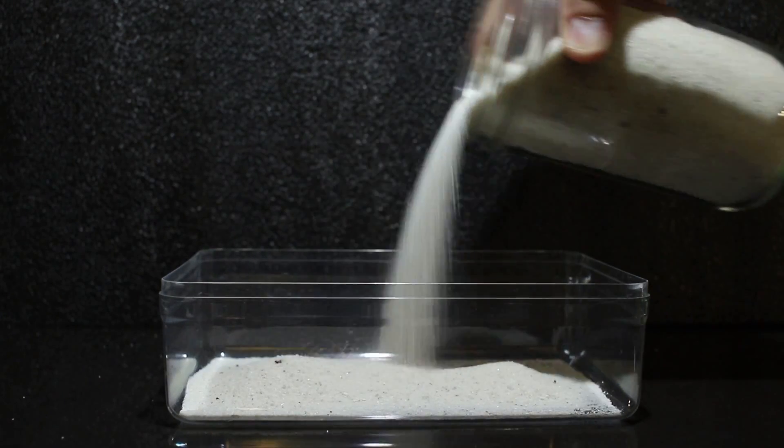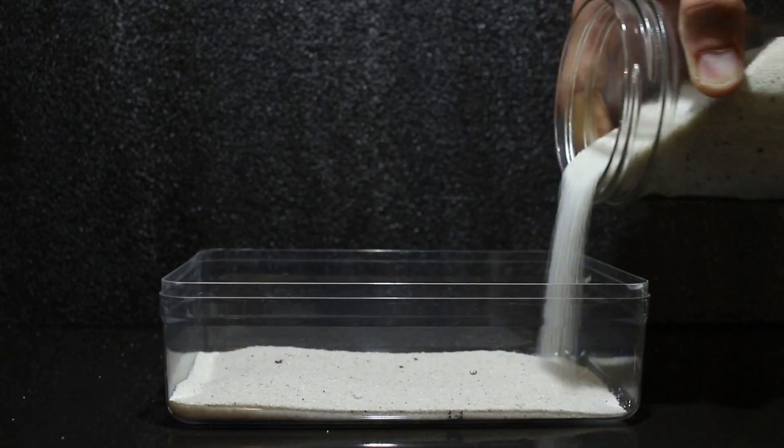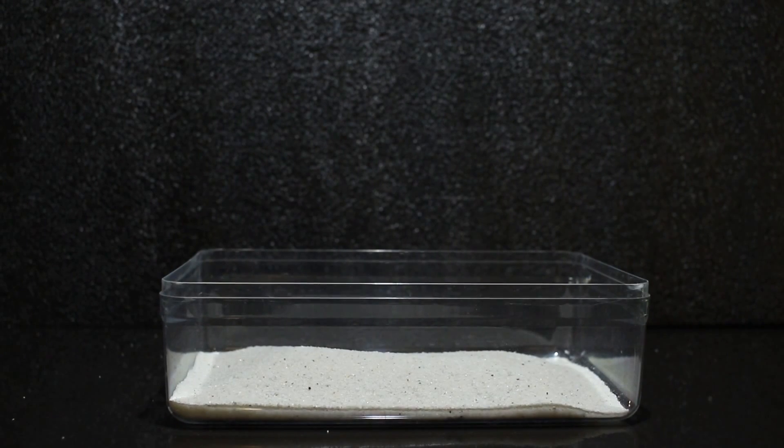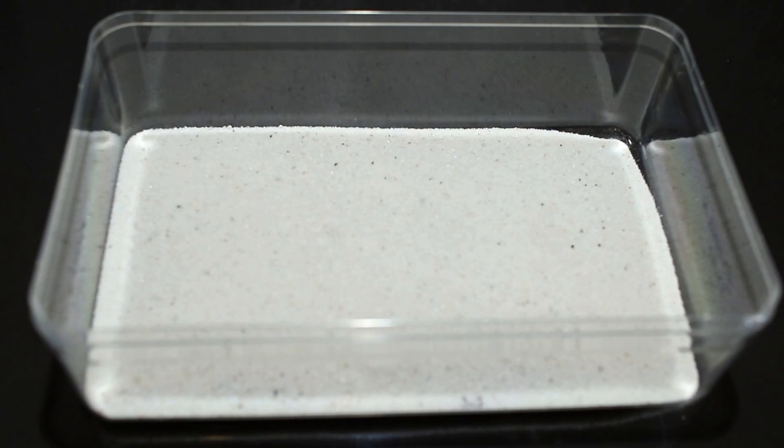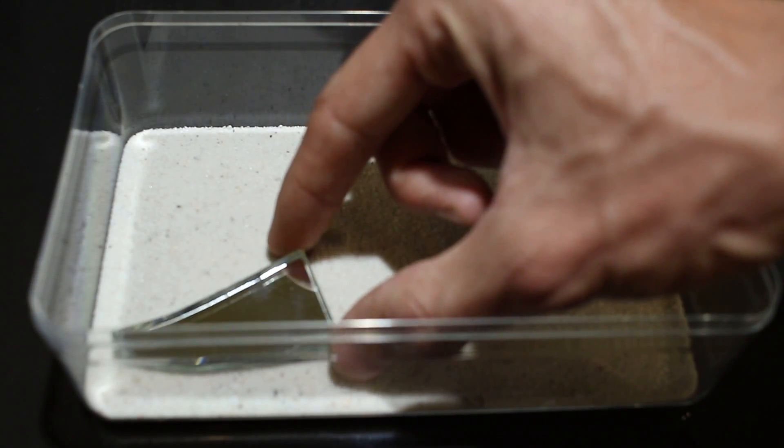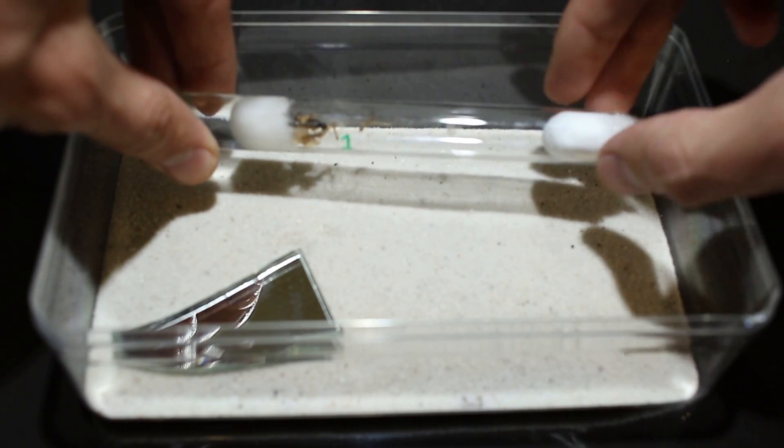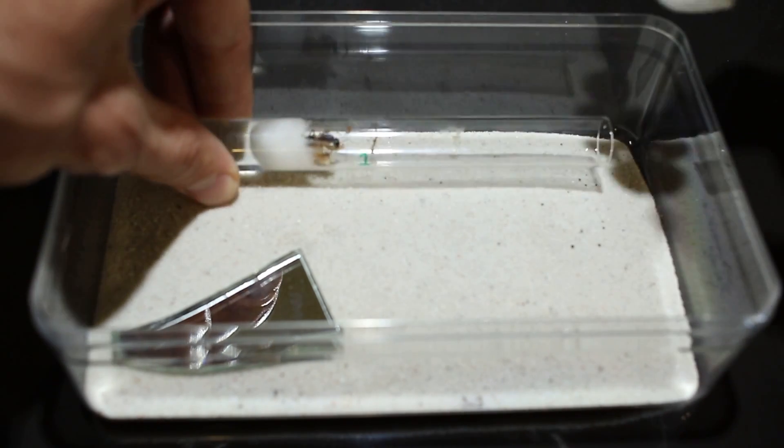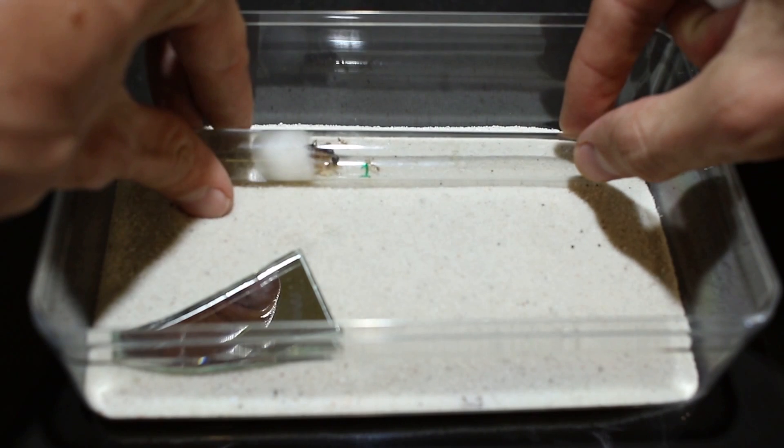So to set up this starter colony, what you do is put a thin layer of sand in the bottom of your container. Then you put down your piece of plastic, which will be where you place the ants' food. You then take your test tube with your starter colony in, remove the front cotton plug, and place it within this small container.